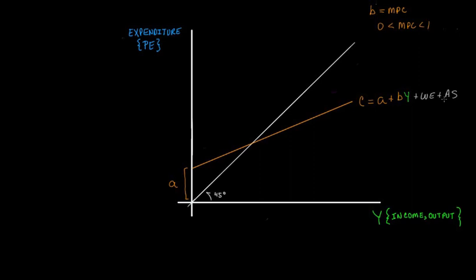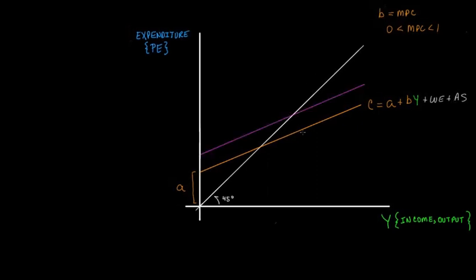The next expenditure category is investment. Investment is represented as an autonomous expenditure — it does not vary with the level of income. There is simply some planned amount of investment in the economy. We will discuss how investment relates to the real interest rate at other points in the course. Adding investment to consumption gives us C plus I as planned expenditures so far.